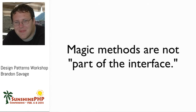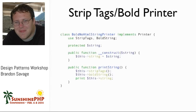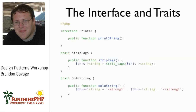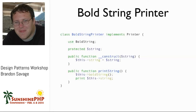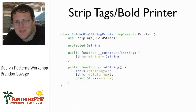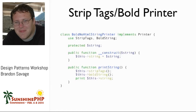Why use traits instead of just writing the logic directly in? If I define separate trait classes for strip_tags and bold_string, I can use bold_string alone, or strip_tags alone, or combine both in one class. Without traits I'd have a lot of duplicated code. Traits are essentially mix-ins in this case. That's a good question - it may have been something others wondered too.